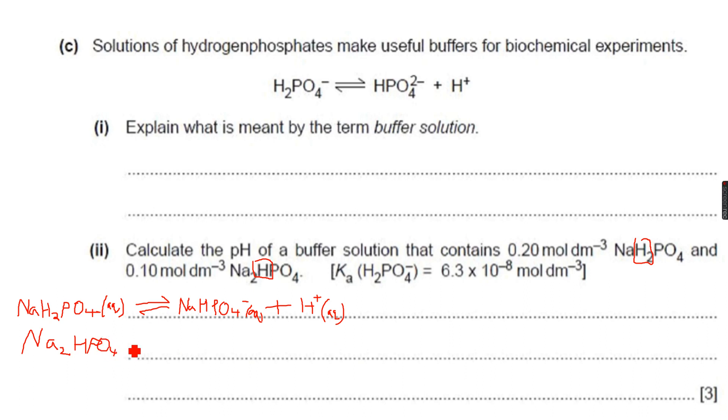NaHPO4 aqueous. Now this will completely dissociate because it is a salt, so it will completely dissociate to form NaHPO4- ions plus Na+ aqueous.